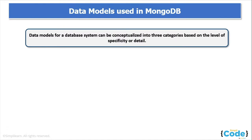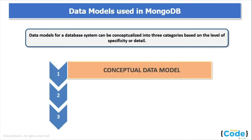Let us now understand the data models used in MongoDB. Once you have understood the business requirement and how the application should be, as you start modeling your data you will likely go through various steps of data analysis. Each step might produce different types of data models. Data models can generally be thought of as being categorized into three types based on the level of detail and specificity.